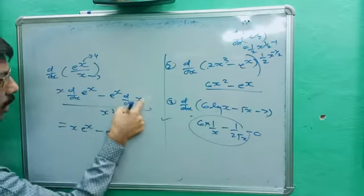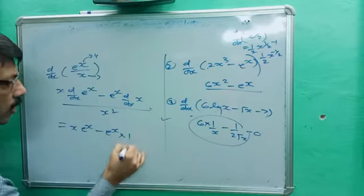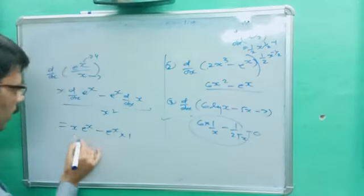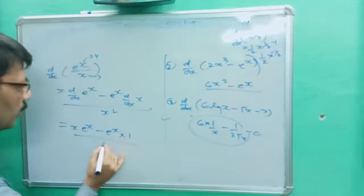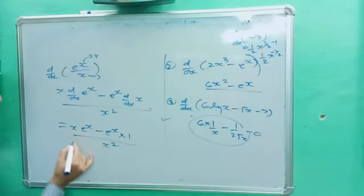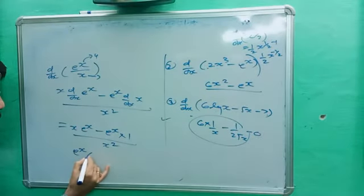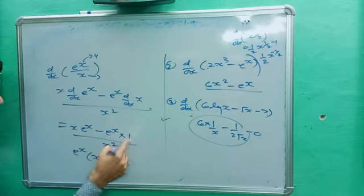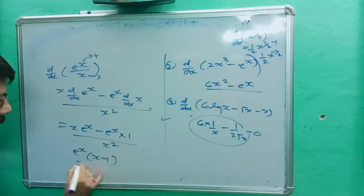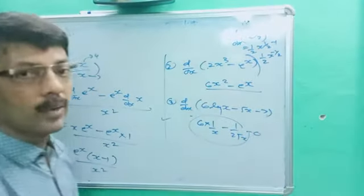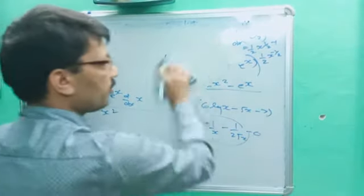d/dx of x is 1, so we get x·eˣ minus eˣ divided by x². Taking eˣ as common, we get eˣ(x - 1) divided by x². This is the answer for the fourth question.